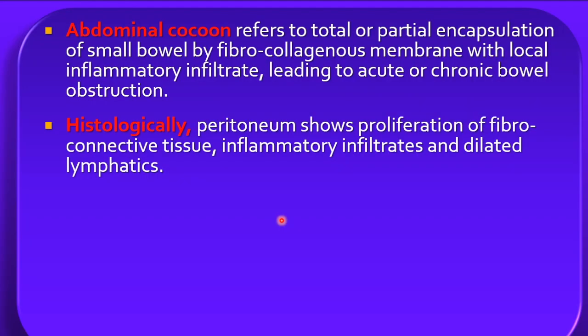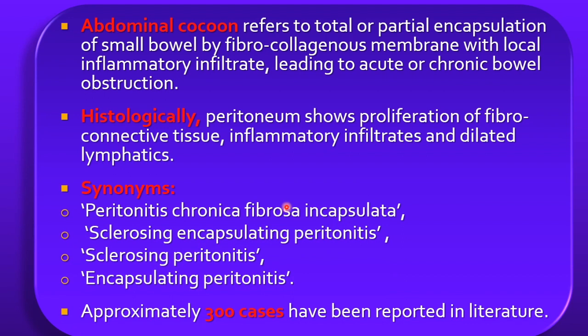Histologically, peritoneum shows proliferation of the fibroconductive tissue, inflammatory infiltrates and dilated lymphatics. Multiple other names exist for this condition such as peritonitis chronica fibrosa encapsulata, sclerosing encapsulating peritonitis, and sclerosing peritonitis, among others.